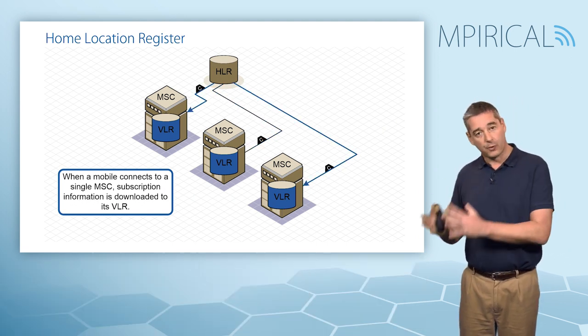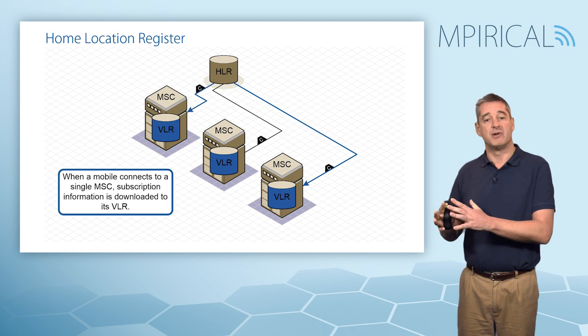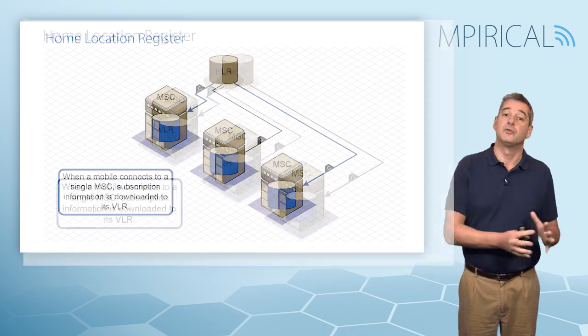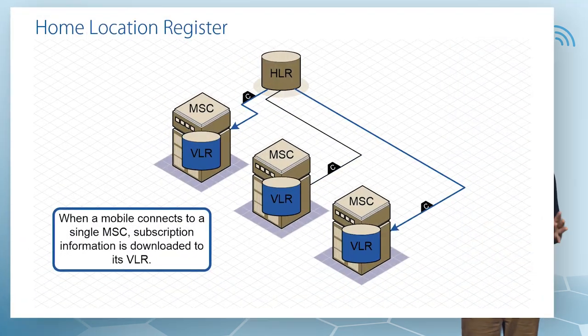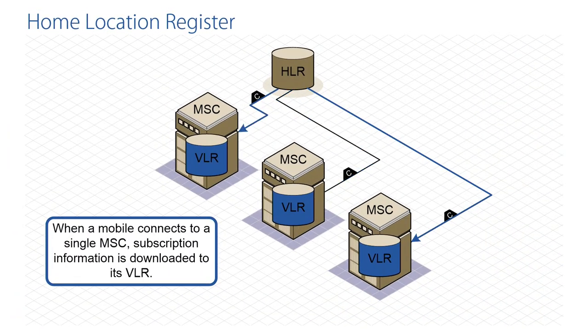As a mobile connects and attaches to an MSC, subscription information about the subscriber is downloaded from the Home Location Register down to the particular MSC VLR that the mobile is operating under, enabling local management.